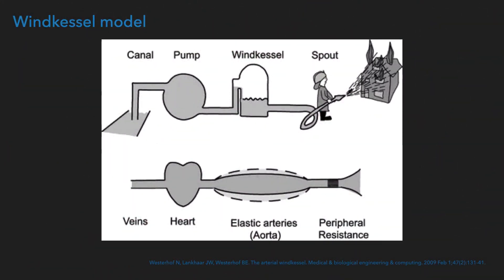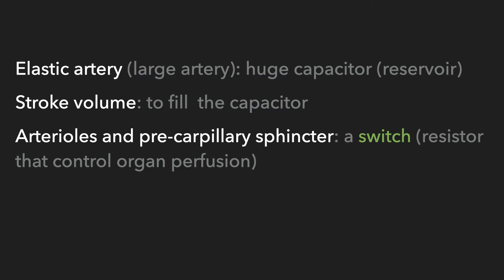This is the idea behind the Windkessel model, which tries to relate organ perfusion using the analogy of a firefighter drawing water from a canal to a pump, and then to a water reservoir — the Windkessel. How strongly the water flows is based on the distal site regulating resistance, pressure, and caliber, which changes water flow in real time. In our arterial tree, it works the same way. The elastic artery is a huge capacitor acting like a reservoir, stroke volume fills those capacitors, and the arterioles and pre-capillary sphincters act like a switch — adjusting resistance and controlling organ perfusion.